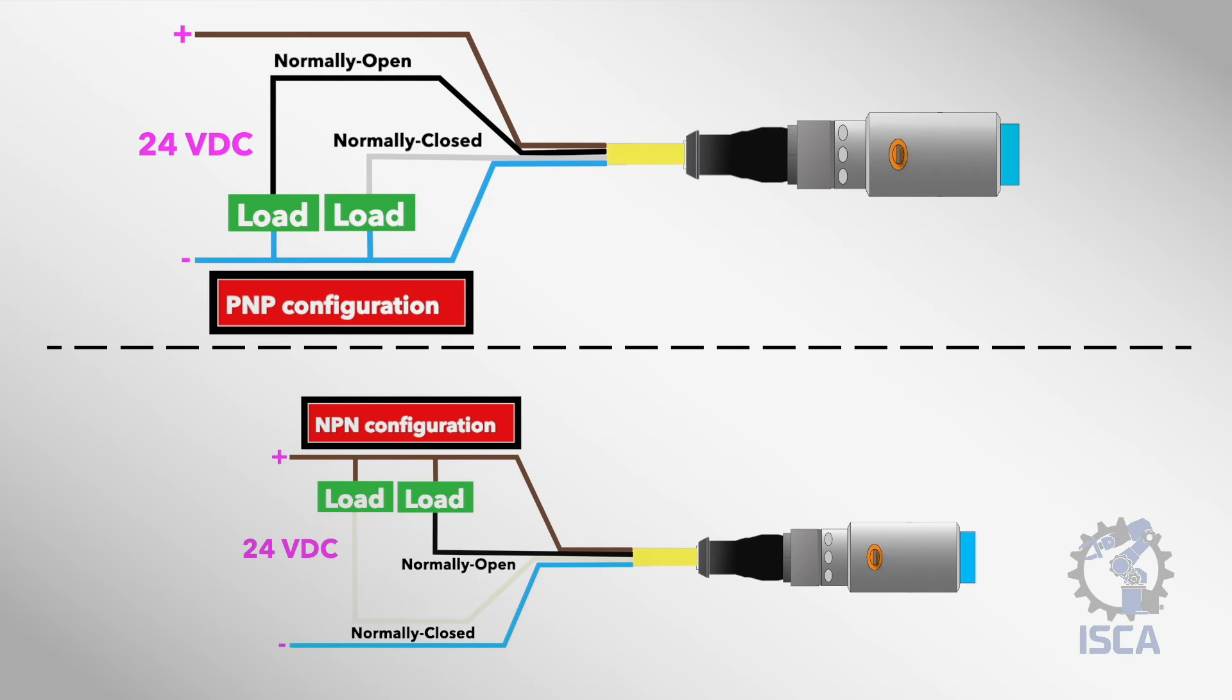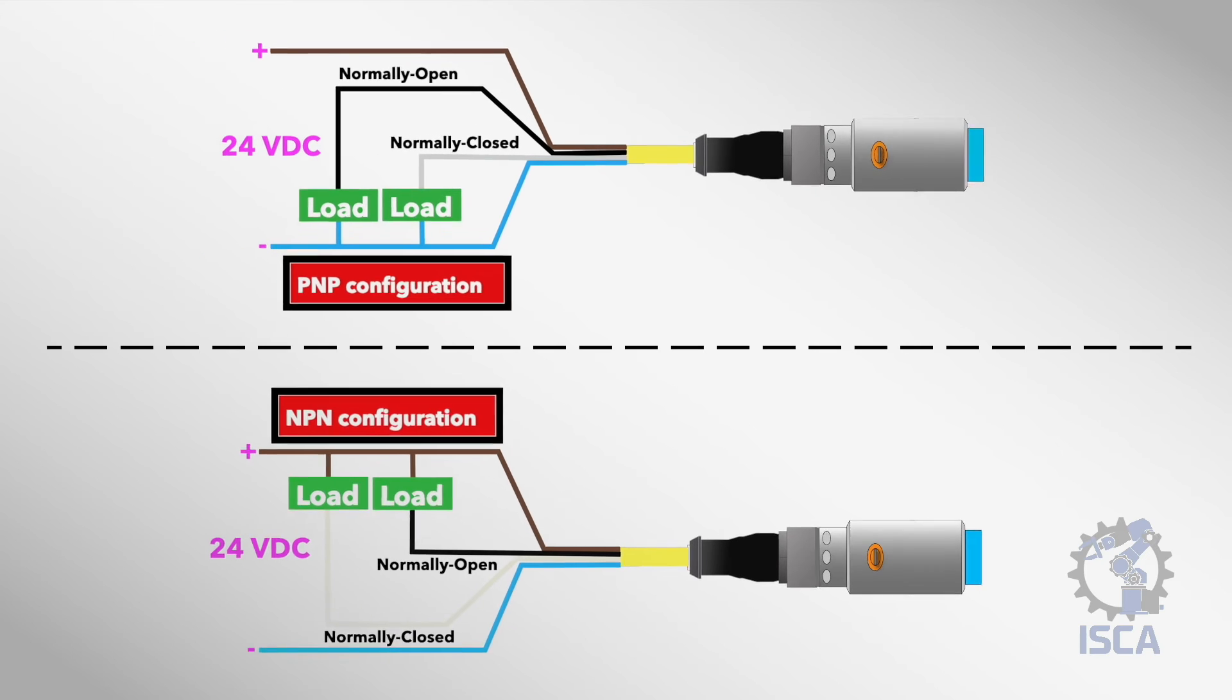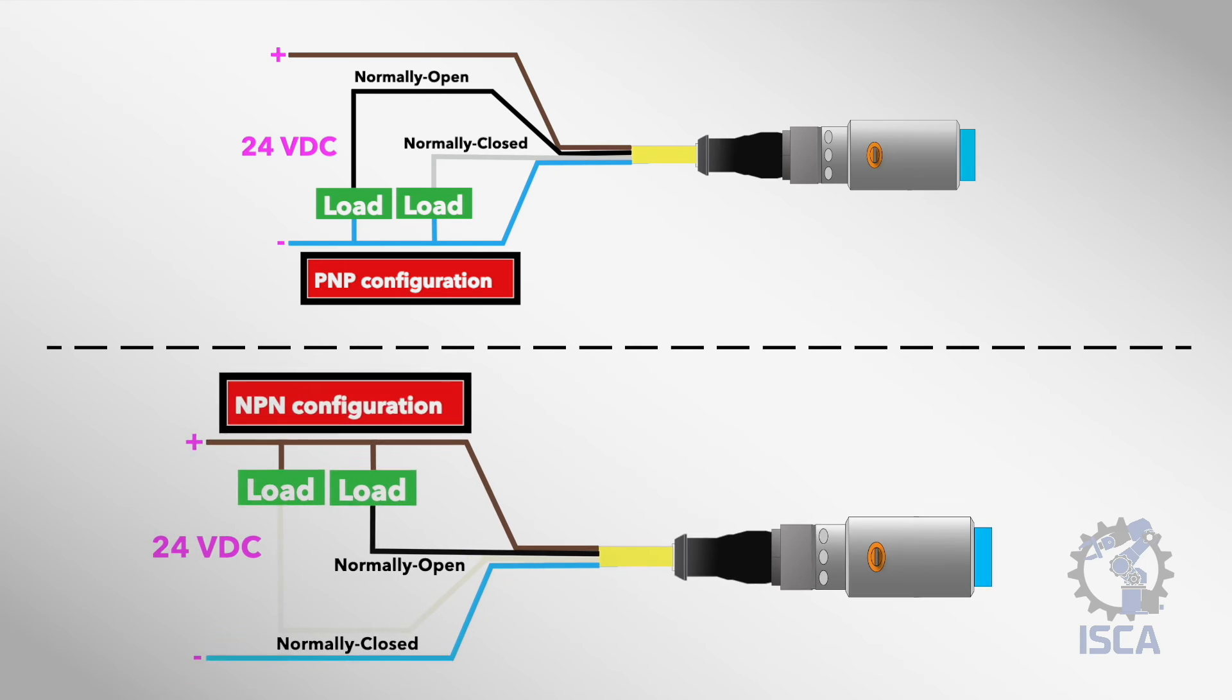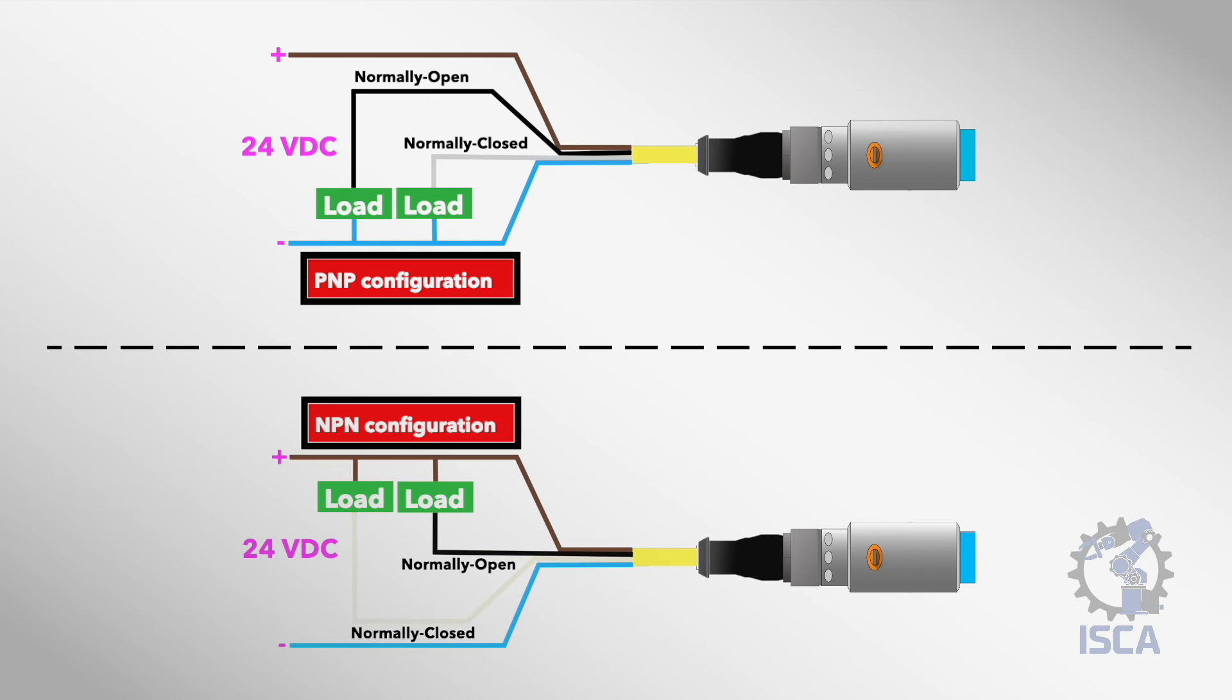PNP outputs provide a positive voltage signal when the sensor detects a target. NPN outputs instead sink to ground on detection. Knowing the polarity and voltage levels needed by the downstream components determines whether a PNP or NPN capacitive sensor should be selected.